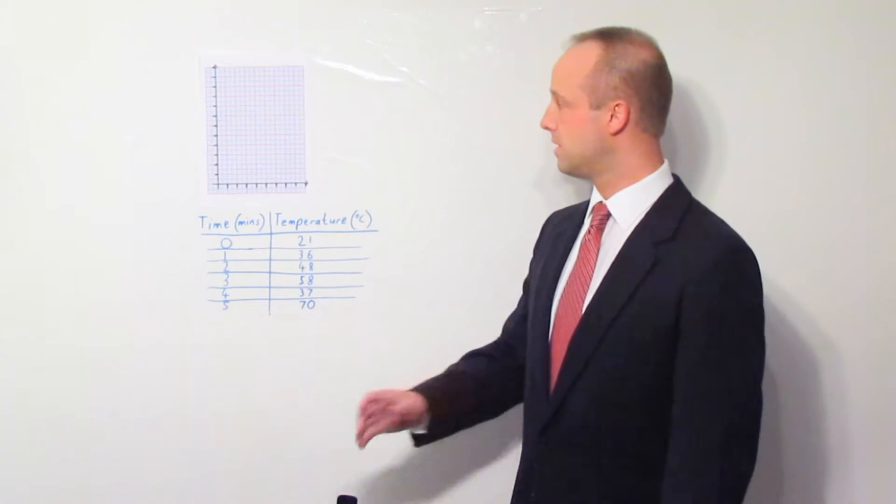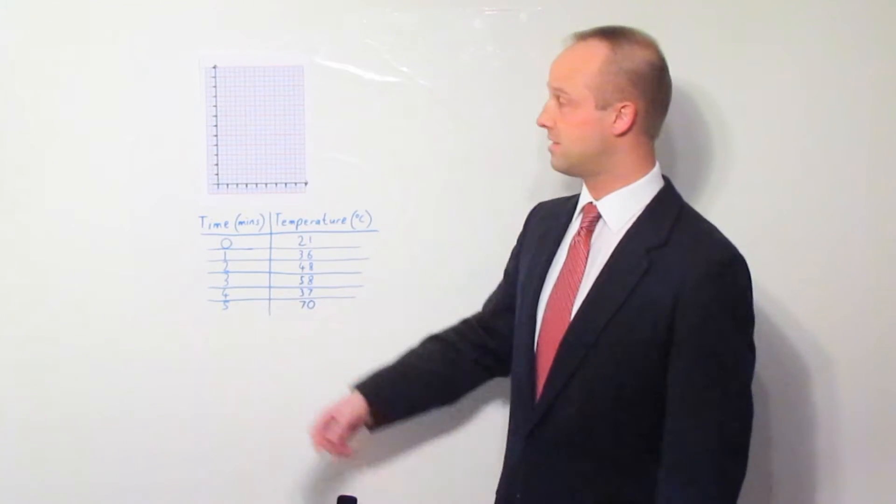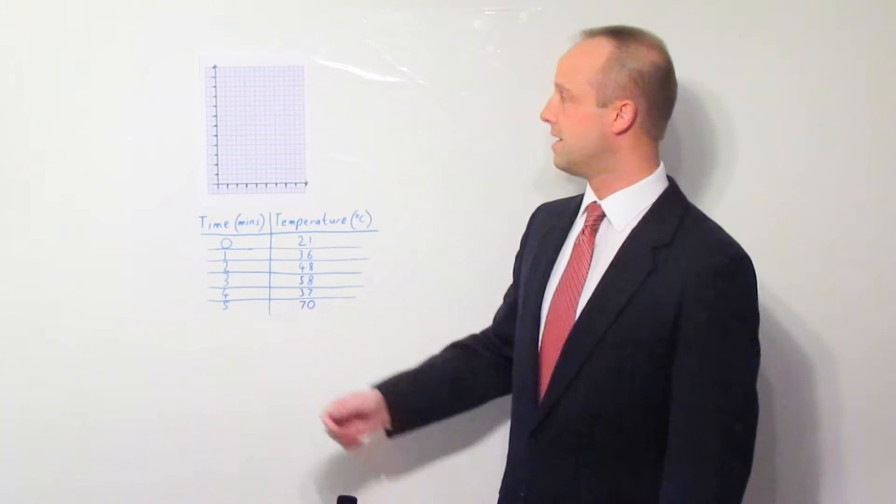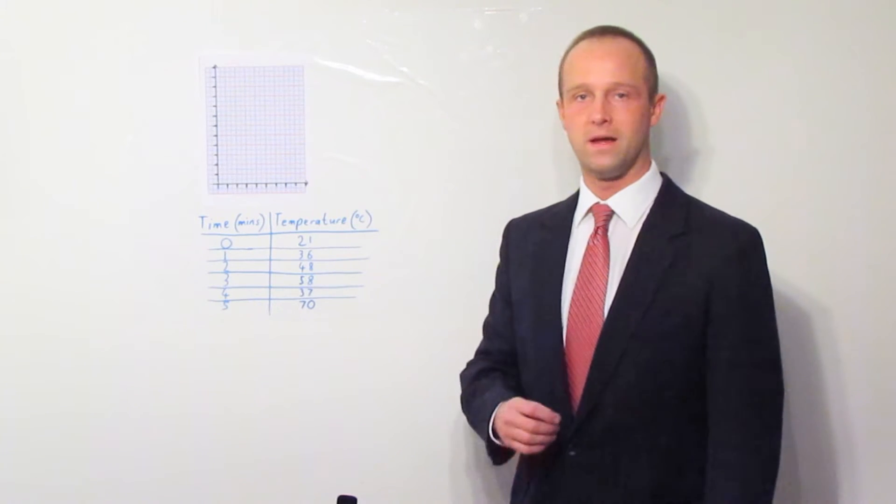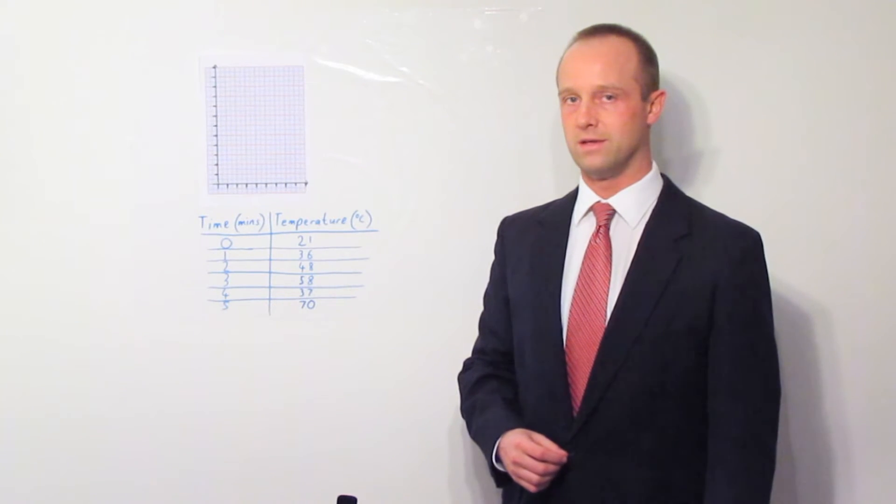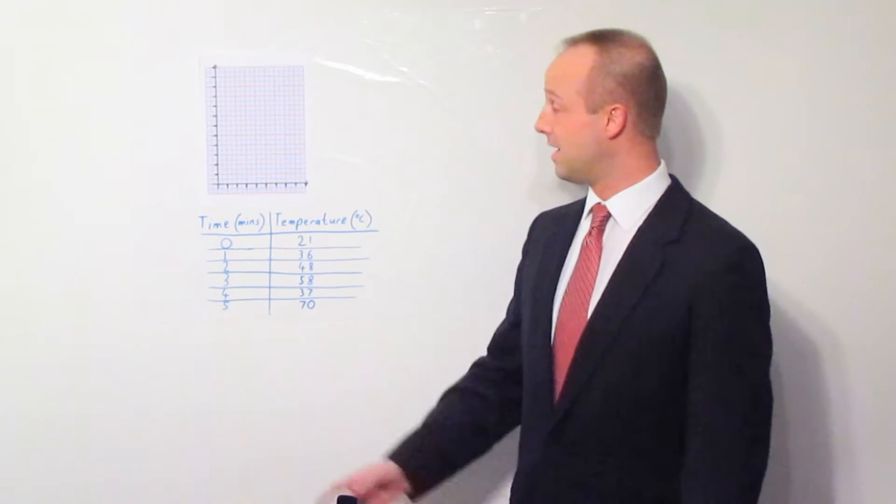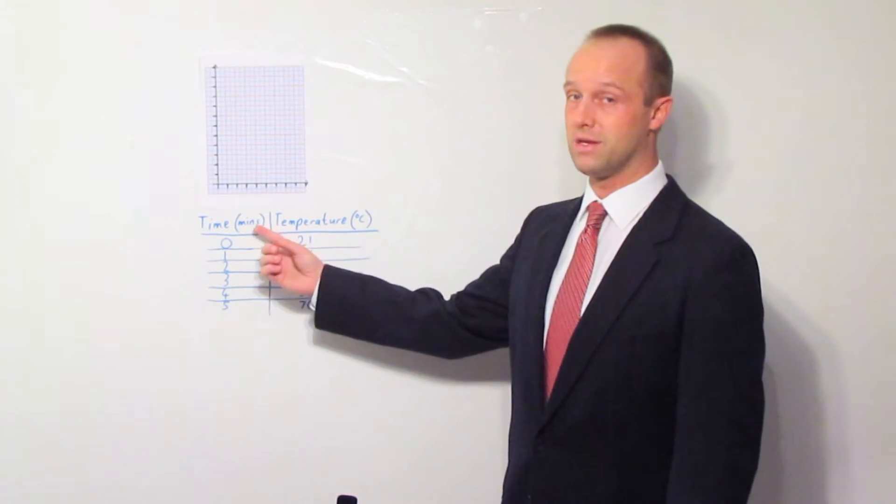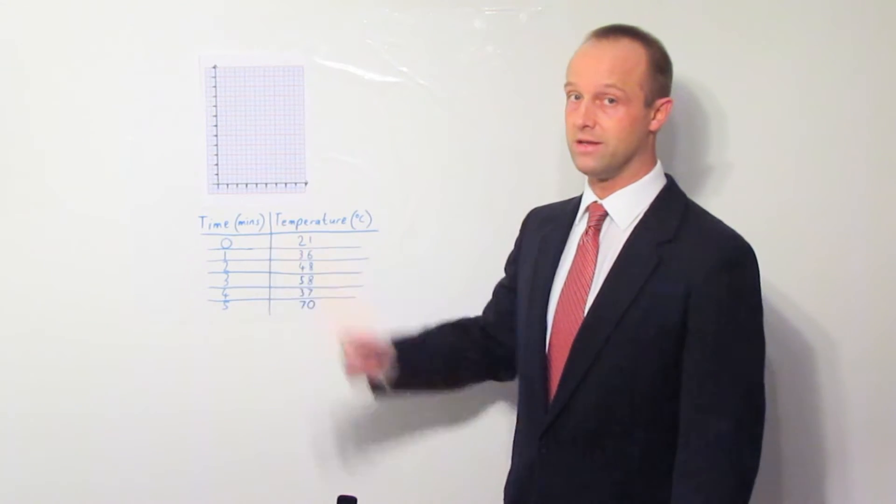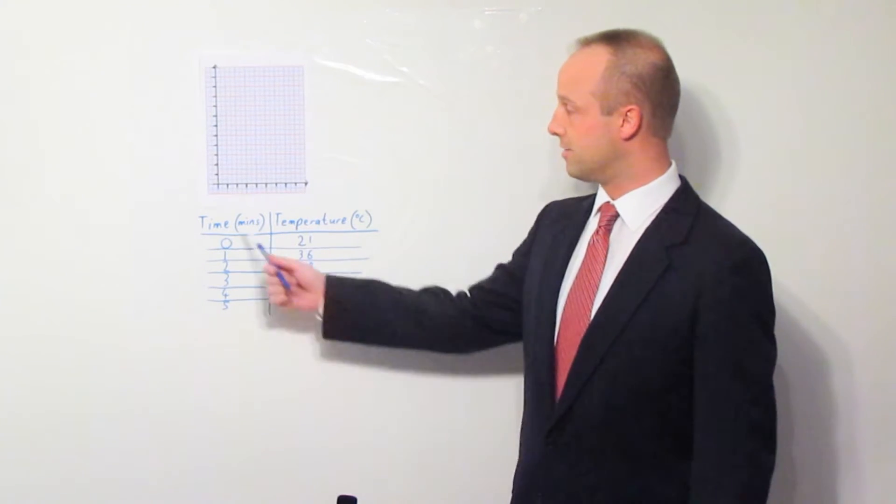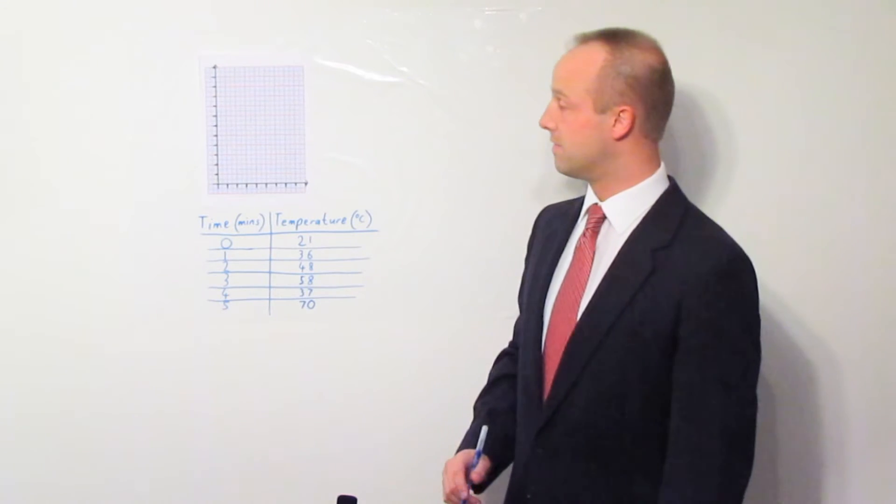Usually, these graphs are out of four. So, you get a mark for getting this axis right, a mark for getting that axis right, a mark for plotting the points correctly, and a mark for drawing a line through them correctly. If you forget the units, you are chucking away a mark. And it's a mark which is really easy to get, because you already have the units written down here in your table of results. So, let's get these headings onto both of those axes.